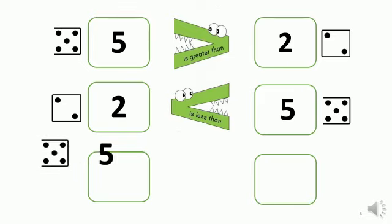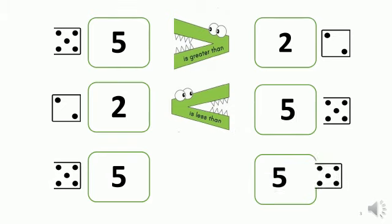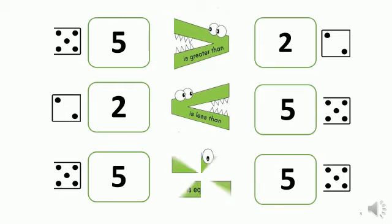Okay, this time I will write number five on both sides. Let's see what the alligator will do. Oh! The alligator just stopped in the middle without opening its mouth. It can't find the bigger number. Do you know why? Because we have the same number on both sides. We tricked the alligator this time, kids, didn't we!